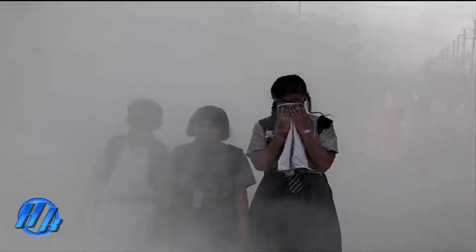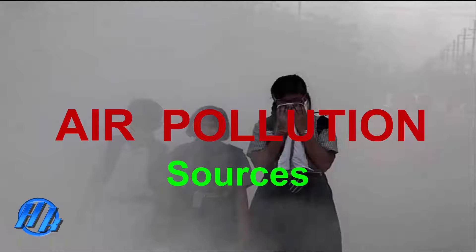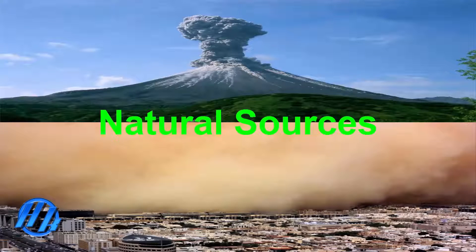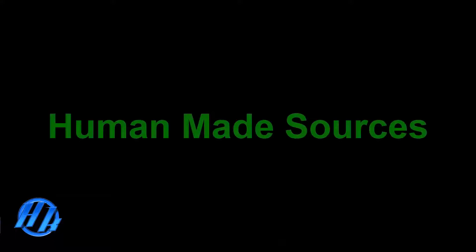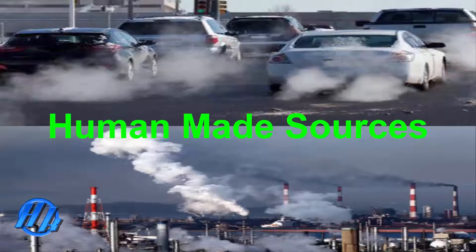Let's first talk about air pollution. Air pollution is taking place from two main sources. The first source is natural sources, like sandstorms and volcanoes. The second source is human-made sources, like cars and factories.